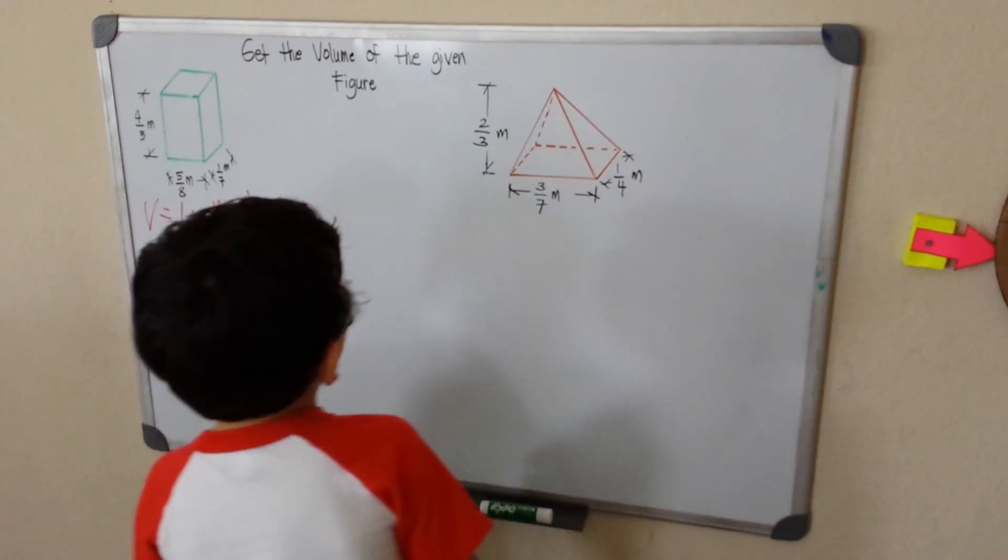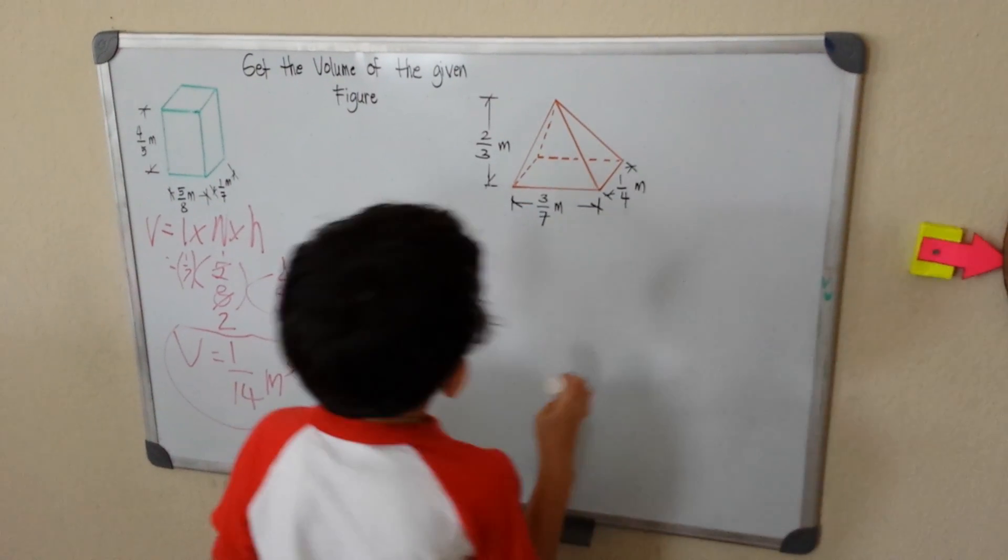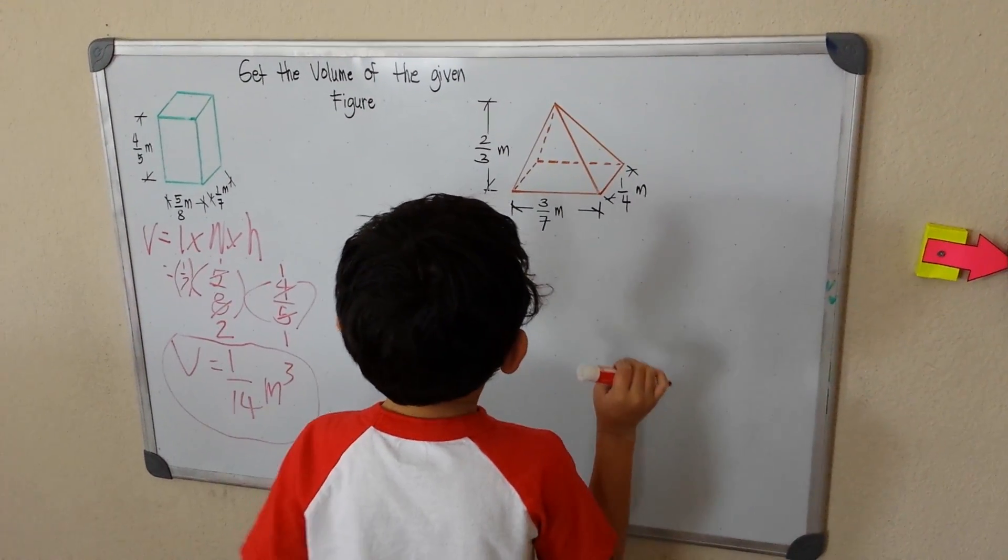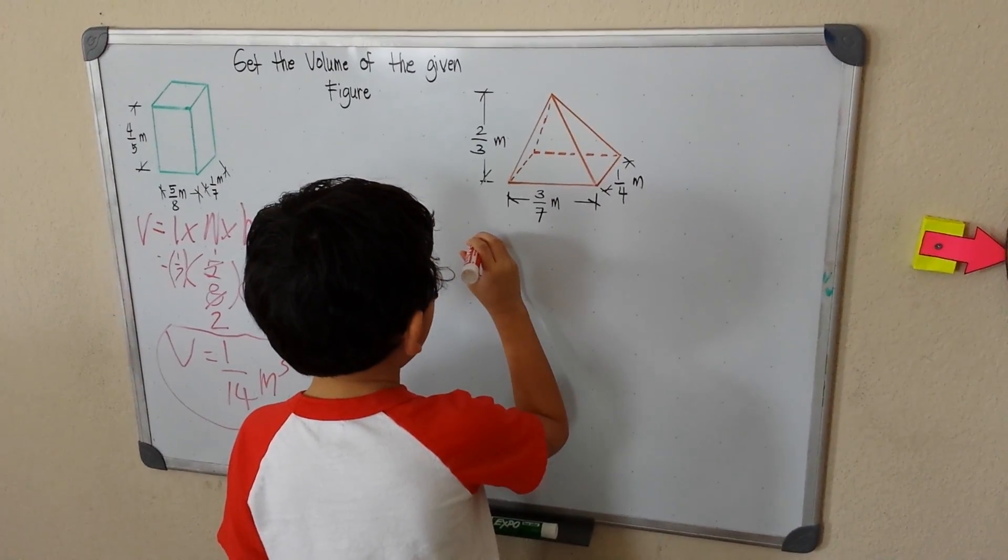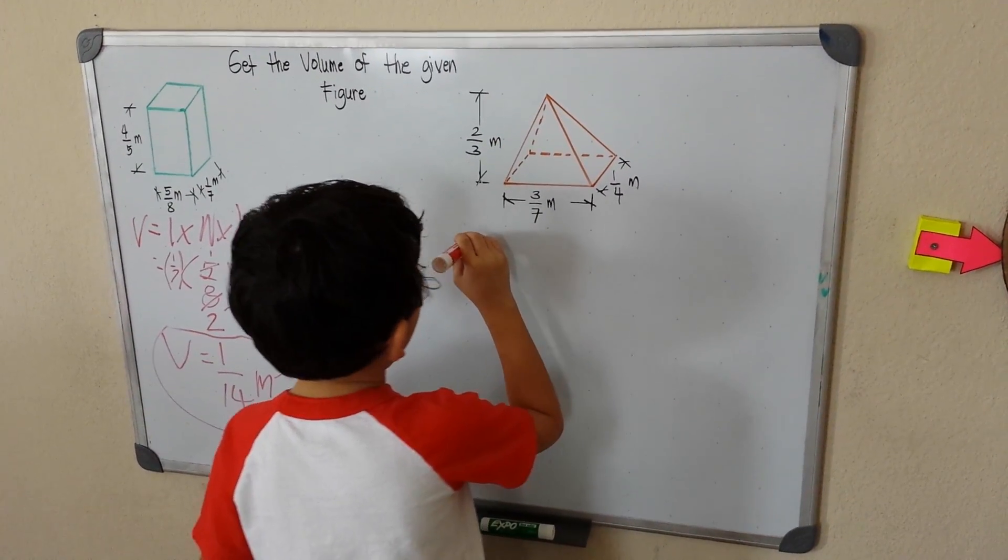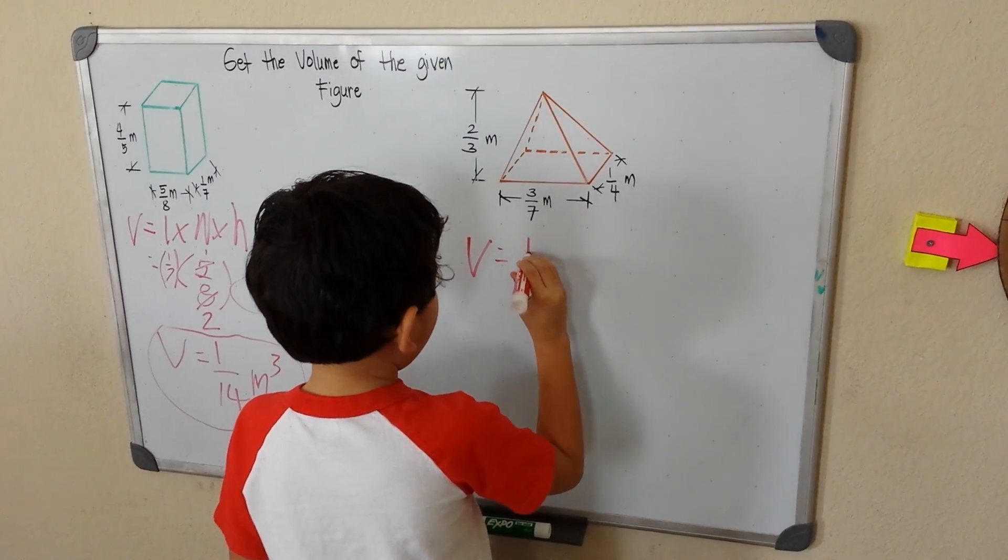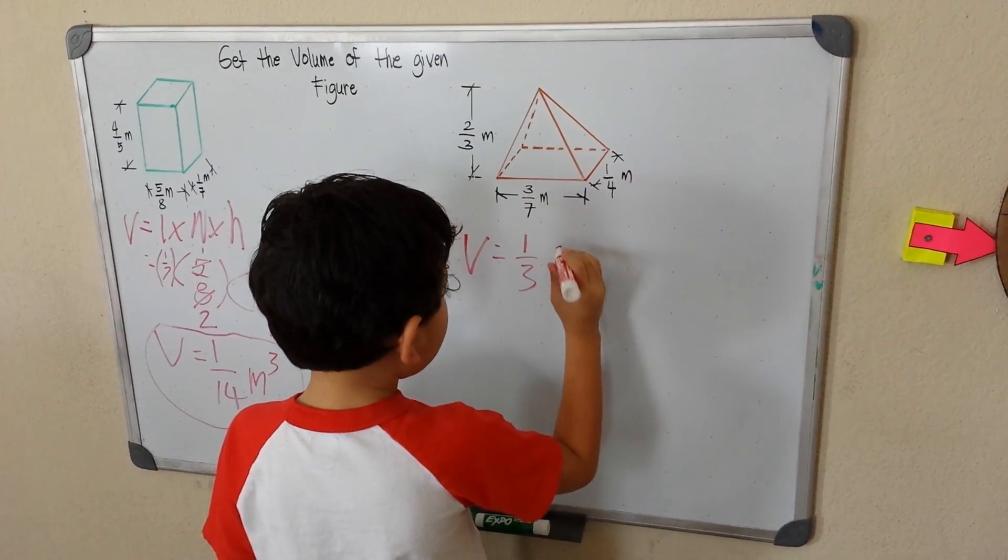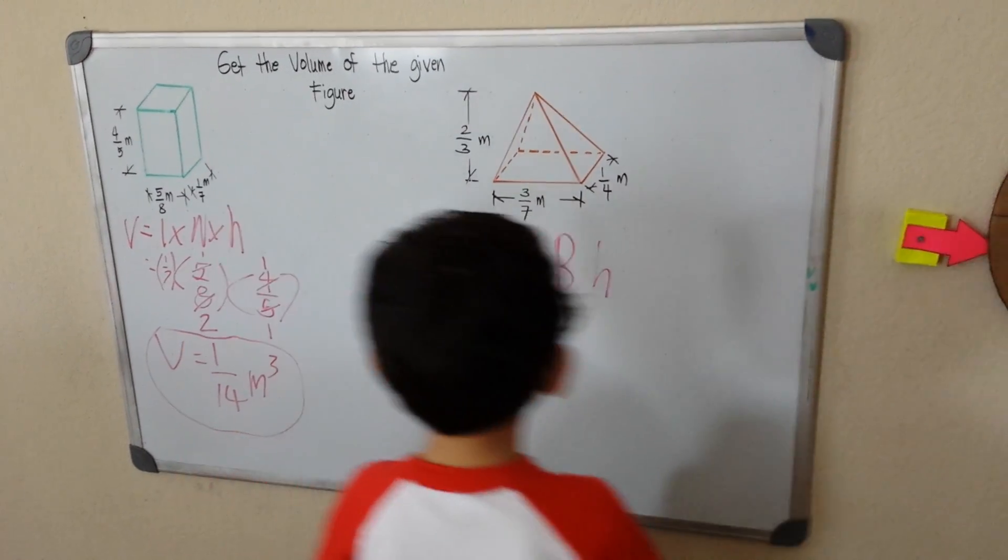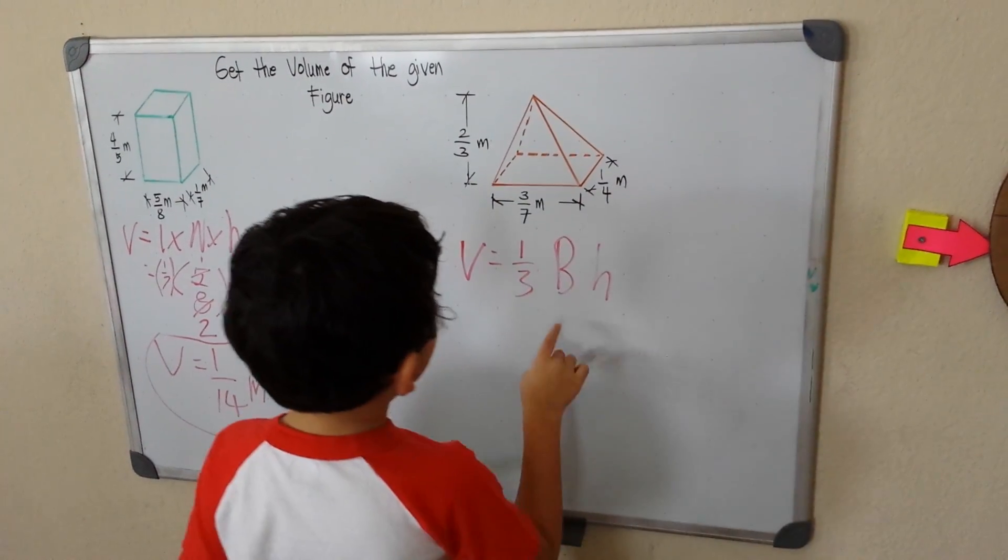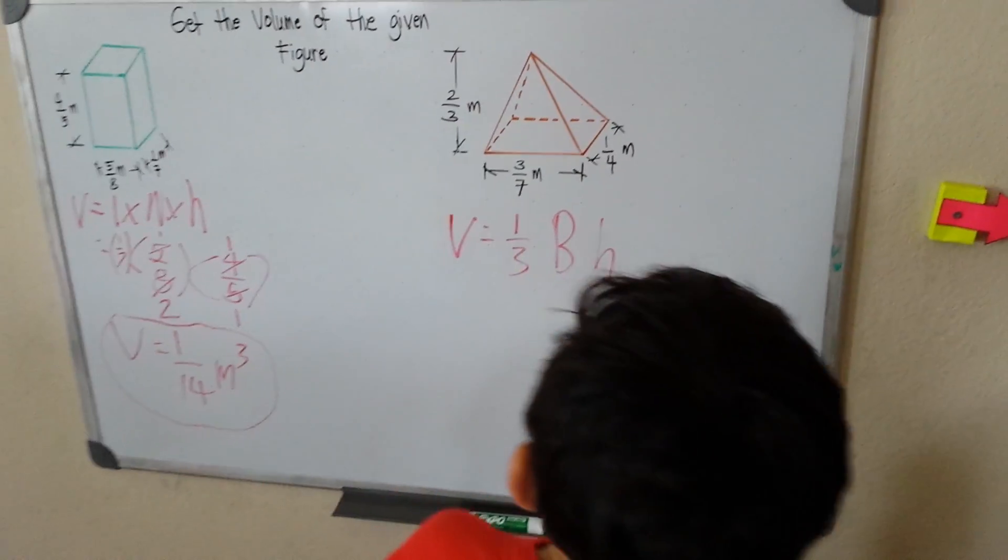So we have, what's here? The prism. Wait, no, it's not a prism. It's a pyramid. I'm sorry, a pyramid. So the volume equals 1/3 times Bh. The capital B is the area of the base, which is our rectangle.